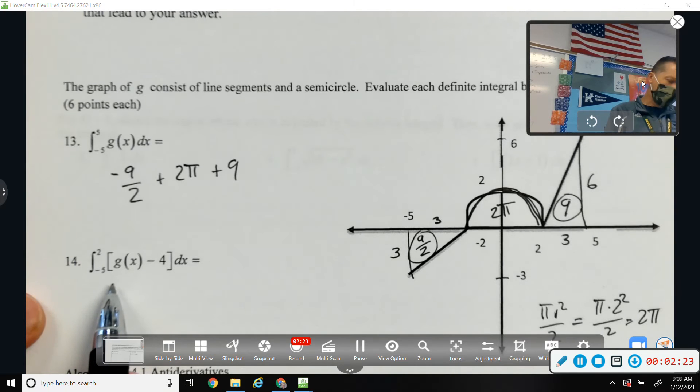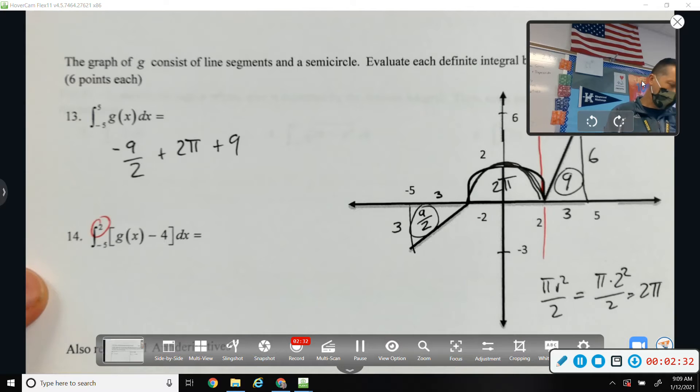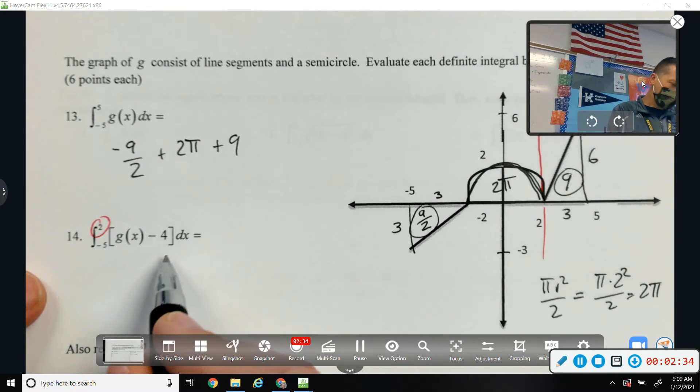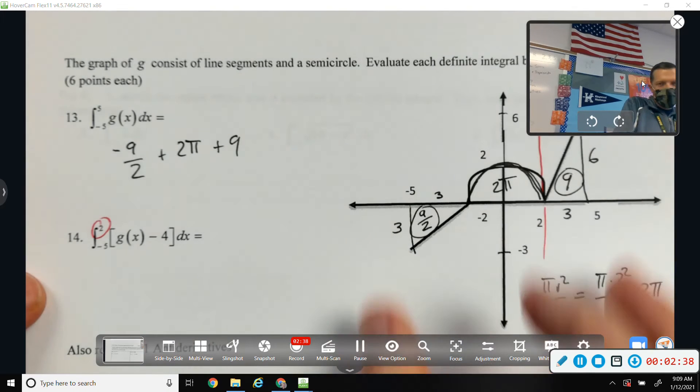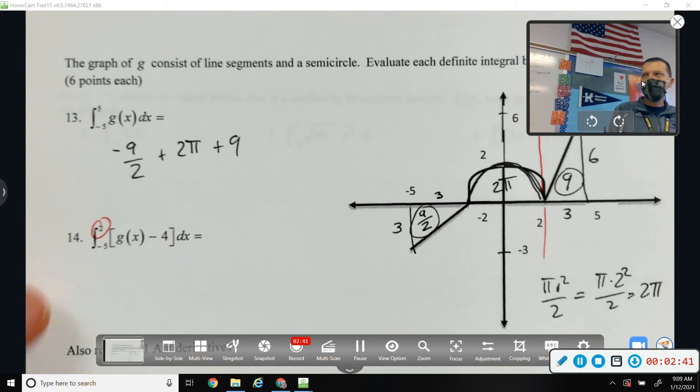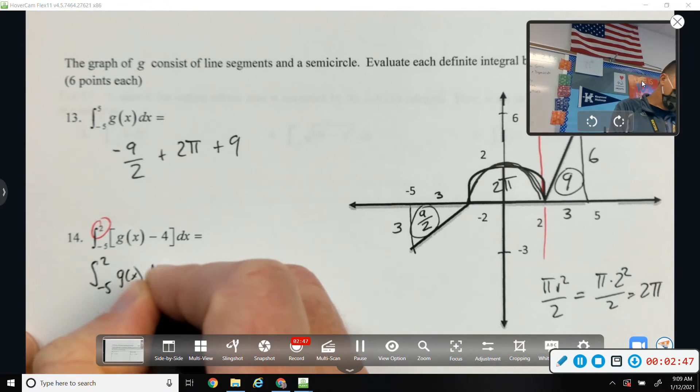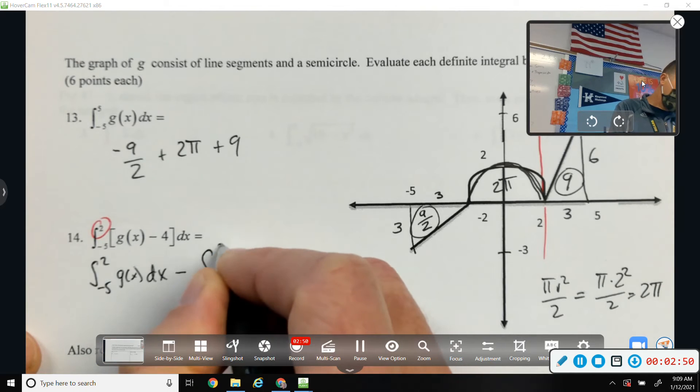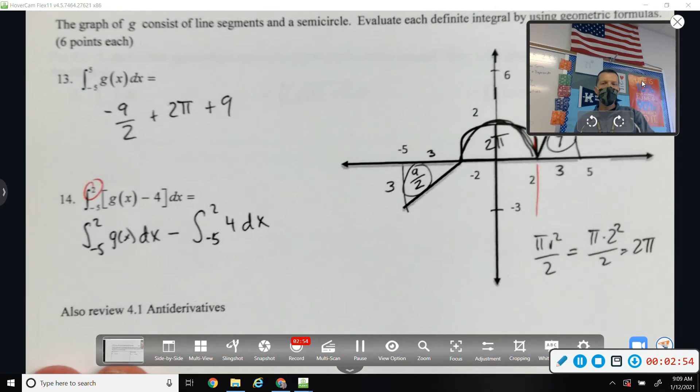All right, from negative 5 to 2. So we're stopping at 2 on this one, so we don't include that last triangle. And minus 4. Well, rather than try to do g of x minus 4, like shift the whole thing down 4, which would really make things look weird, I think instead I want to just write it this way.